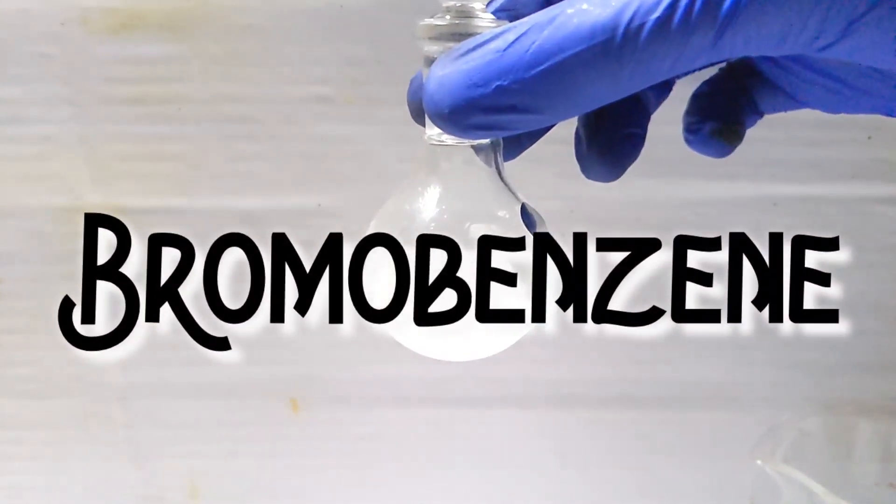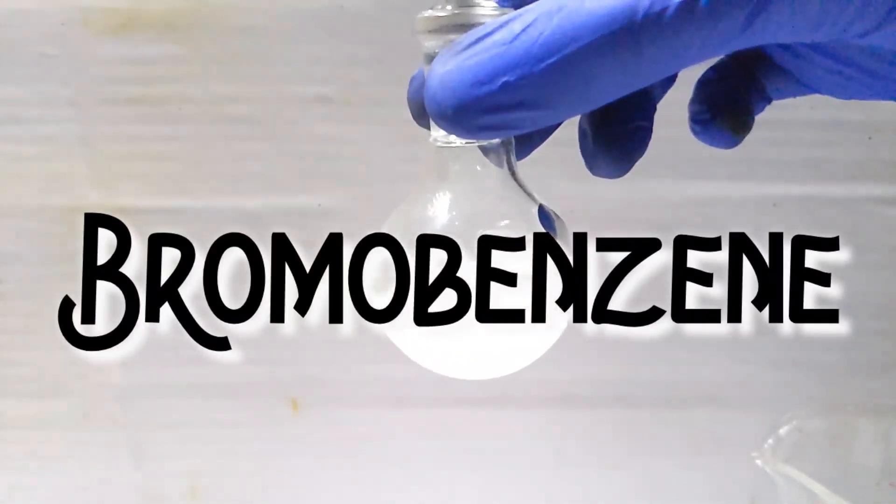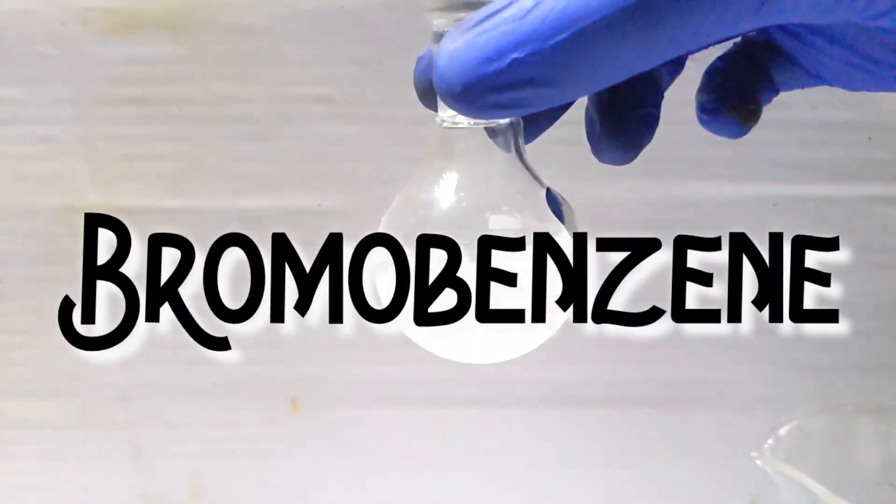Hello friends, in this video we make an aryl halide, bromobenzene, via the direct bromination of benzene.